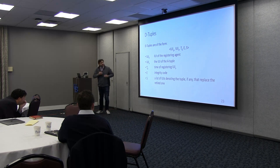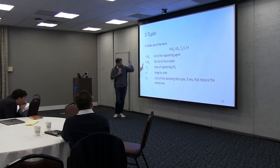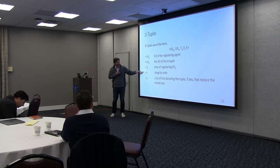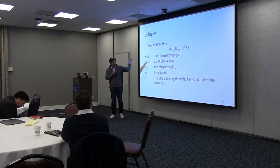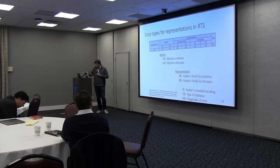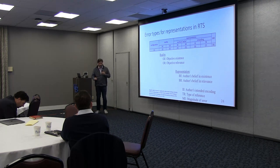Through these abstract tuples, the last two values would be: one, an integrity code — this tells us whether there's any error and, if so, what kind; and the last one tells us if there are any tuples that replace the one being referred to. There are various types of errors a tuple might have — the object doesn't exist, or the author thought it was relevant but it's really not relevant, and so on.